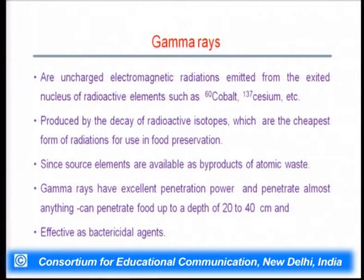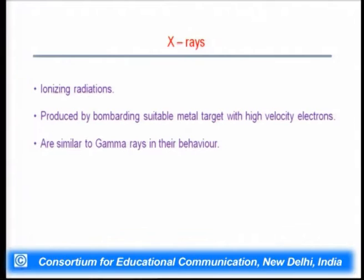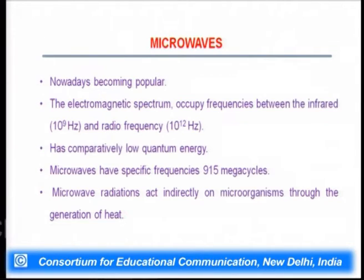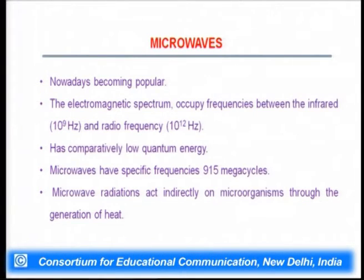Gamma rays are considered an effective bactericidal agent. X-rays are ionizing radiations produced by bombarding a suitable metal target with high-velocity electrons and behave similarly to gamma rays. Microwaves are becoming very popular; they lie between infrared and radio frequency and have comparatively low quantum energy. Microwaves use specific frequencies of 915 megacycles and indirectly kill microorganisms through heat generation, which is why most industrial processes do not prefer them.